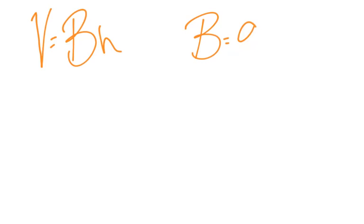So let's start with our formula. The formula that you will see on your star chart is V equals capital B H. Now in our area formulas we dealt with a lowercase b. This one is a capital B and here's why. Capital B stands for the area of the base.